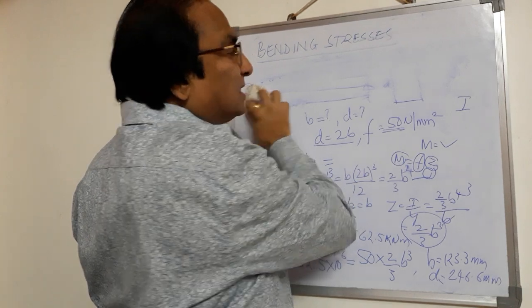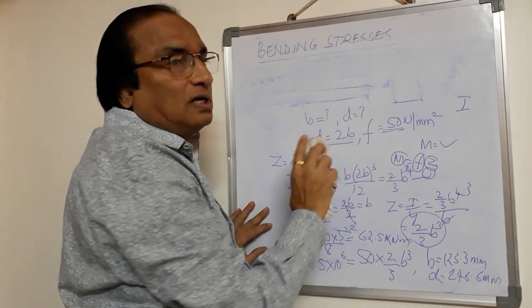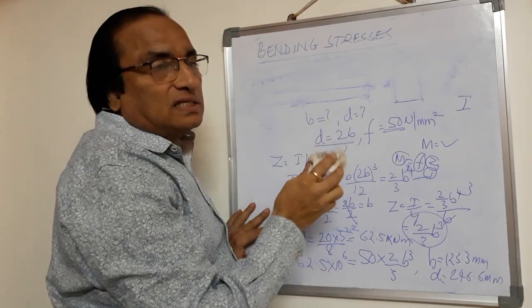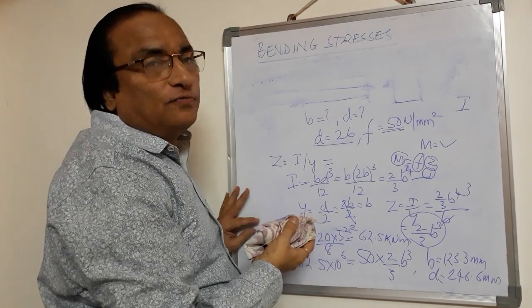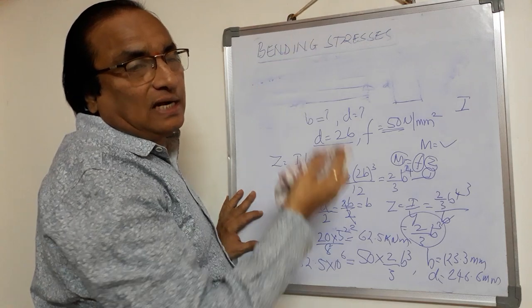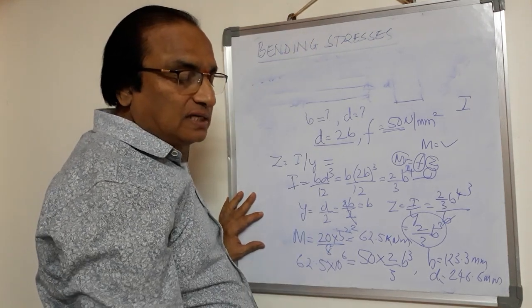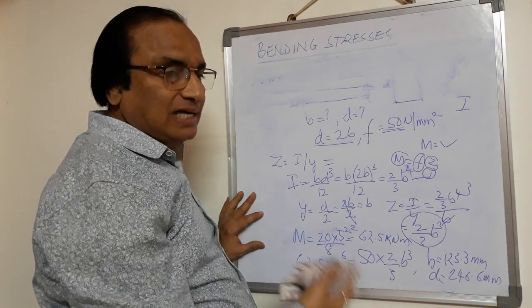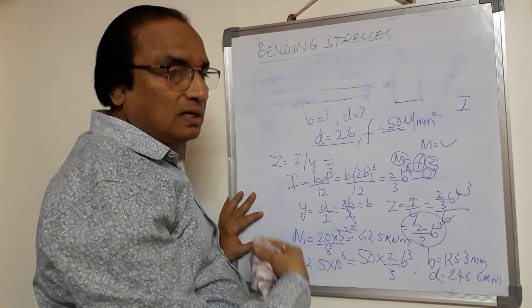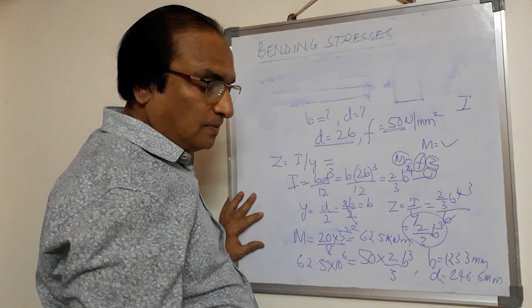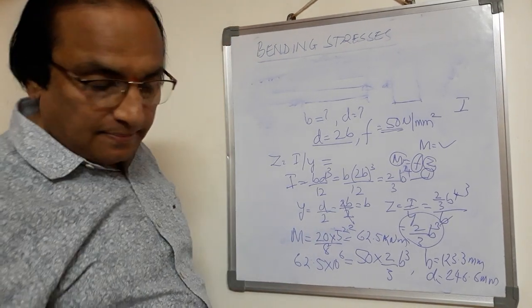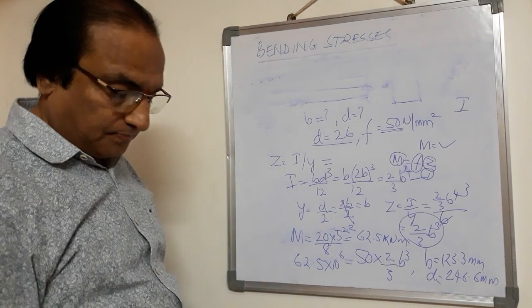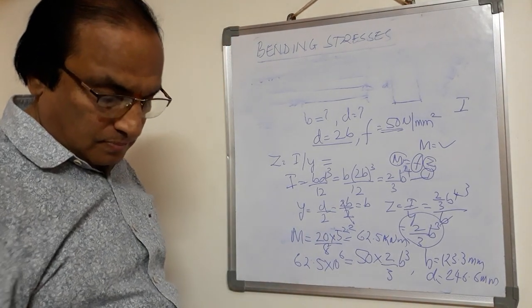In this case also, the bending stress diagram will be symmetric — tension and compression are both equal. We get the same diagram as drawn in the earlier problem.